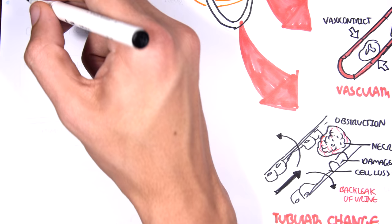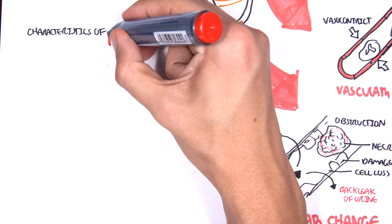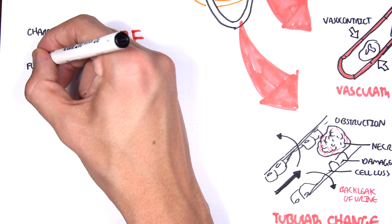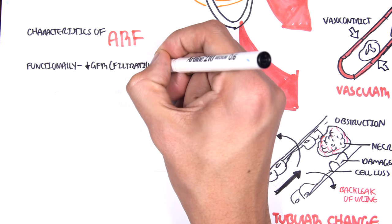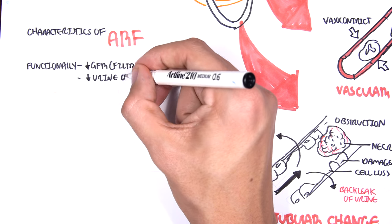So now just quickly going over the characteristics of acute renal failure. Functionally, we have a decrease in GFR, the filtration. This will lead to a decrease in urine output.